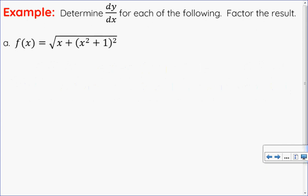I have two examples to go over with you. In this first one here, I have a radical function. I'm going to rewrite this as a power function to the one half. Once I do that, now I can take the derivative applying chain rule.